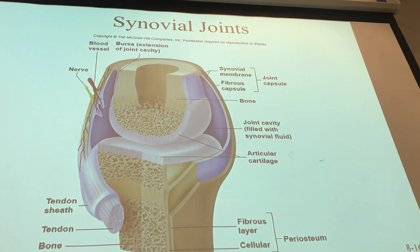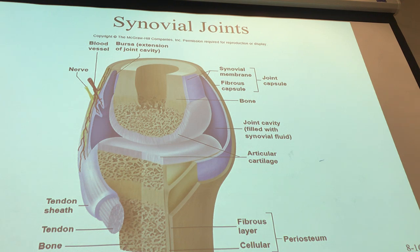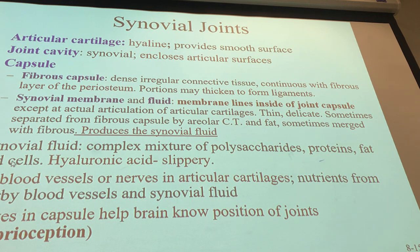Sometimes joints swell up after repeated use. Basketball players after running and jumping a lot may have a swollen knee. When your knee swells, it means there's a slight rupture of the synovial membrane, and the synovial fluid that should be inside the knee drains out externally, making movement harder because the fluid is restricting it. Synovial fluid is a complex mixture of polysaccharides, proteins, fat, and cells with hyaluronic acid, giving it that slippery quality.